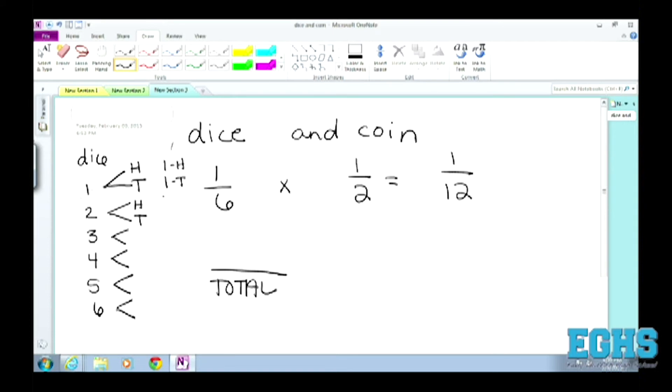...a one and a tails, a two and a heads, a two and a tails, and so on. And so, what this does is it means that there are twelve total possibilities, and only one of those total possibilities is that rolling a six and getting a heads on the coin.